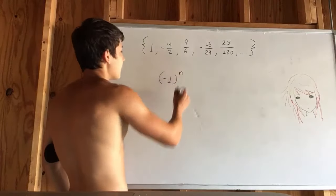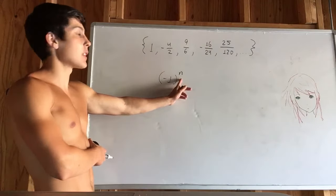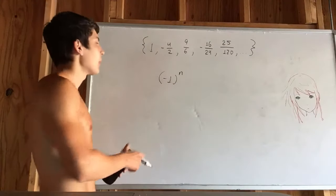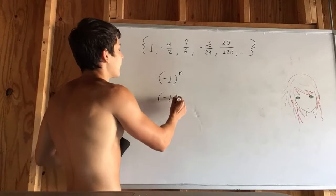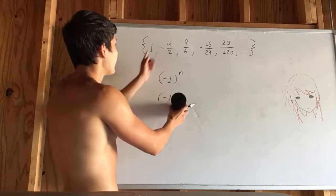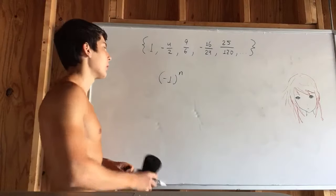If we were to choose n, and since we know that we start our sequences with n being 1, what would happen? We would get a negative, right? Because negative 1 to the power of 1 would give you negative 1. And we don't have actually a negative 1, we have a positive 1.